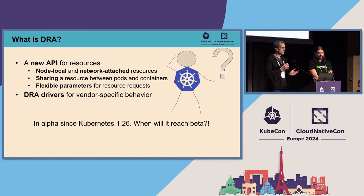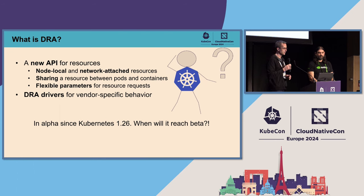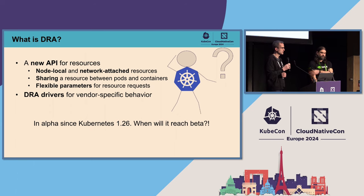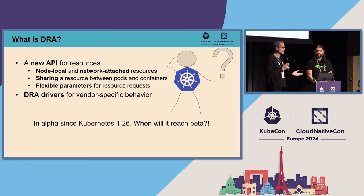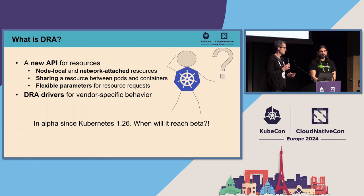We designed it so that a resource can be local to a node — that was what you could do with the device plugin interface — but it can also be network-attached. The API allows flexible sharing between pods and containers because it has a standalone concept of something you're referencing. We also added a new concept for defining parameters for your resource claim. These parameters affect scheduling. You may request something of a certain size, but you can also define parameters that configure your hardware, which becomes relevant when you have complex hardware that needs to be initialized in a vendor-specific format.